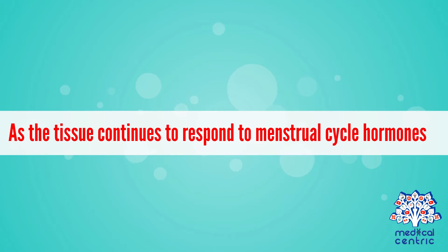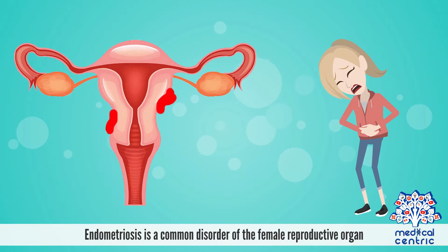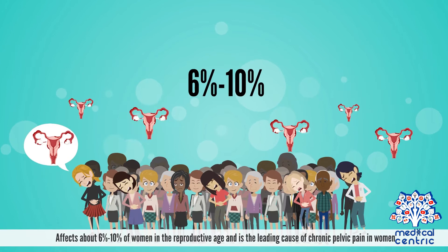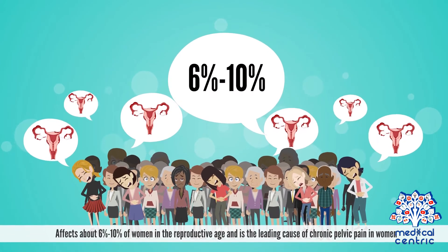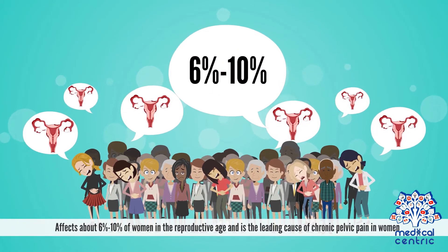As the tissue continues to respond to menstrual cycle hormones, endometriosis forms deep inside the body and may cause scar tissue or painful adhesions. Endometriosis is a common disorder of the female reproductive organ, affecting about 6% to 10% of women in the reproductive age, and is the leading cause of chronic pelvic pain in women.